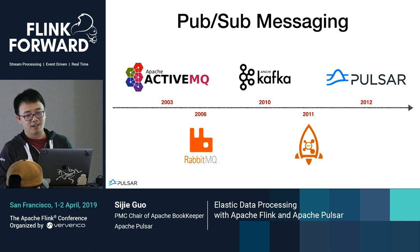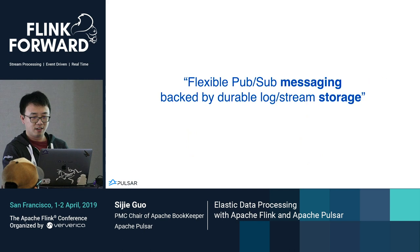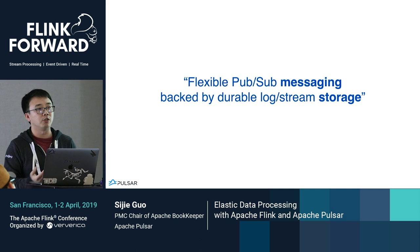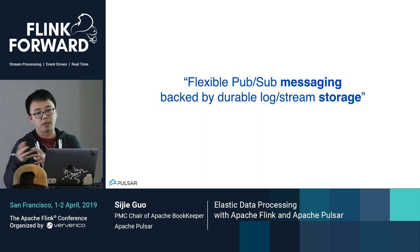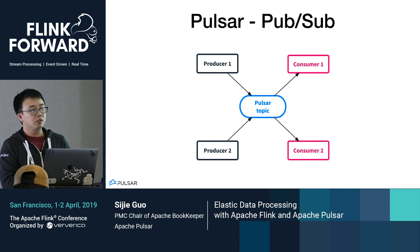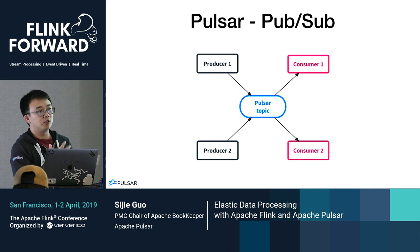A simple sentence to describe how Pulsar differentiates from traditional messaging technology: it's a flexible PubSub messaging system, but different from traditional PubSub in that it's backed by durable log storage. It comprises two parts — messaging and storage. So it's not just a simple pipe. It's similar to other PubSub systems: you have a topic as the entity of your data, a producer produces data to the topic, and a consumer consumes data from the topic.